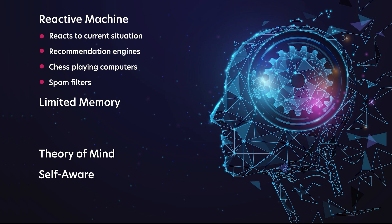Limited memory AI, such as self-driving cars, observes and monitors factors like the rate and speed of other vehicles, the physical environment, and past information. These systems use both historical data and present conditions to make decisions.